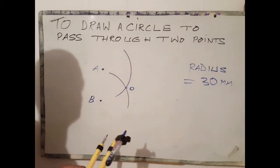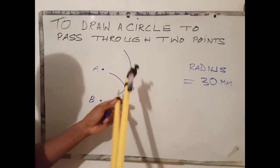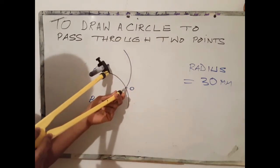With O as center, open your compass to O A or O B. Next step is to draw a complete circle.